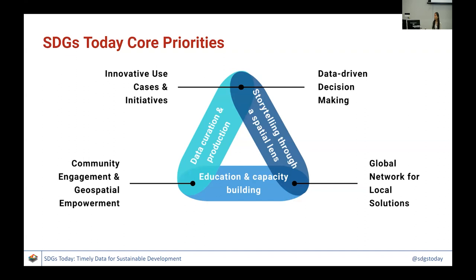We also have an education and capacity building work stream, which spans a lot of different things. For example, this summer we're having our third annual Eco Ambassador summer program, a program for middle and high school students to learn how to use geospatial data for the SDGs. We've also created story maps in collaboration with ESRI teaching people how to use ArcGIS and geospatial data. The project I'm presenting now basically cross-cuts all of these priorities.